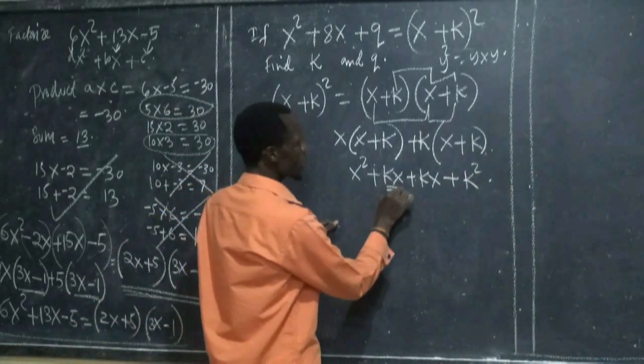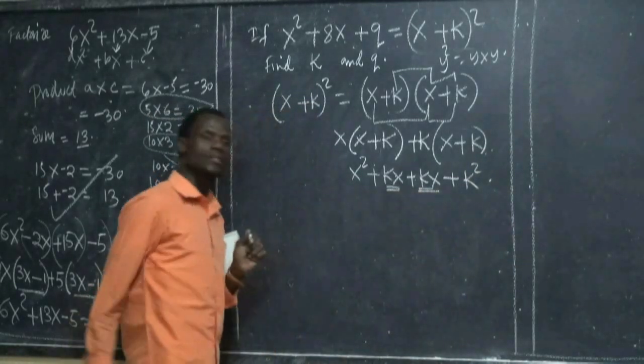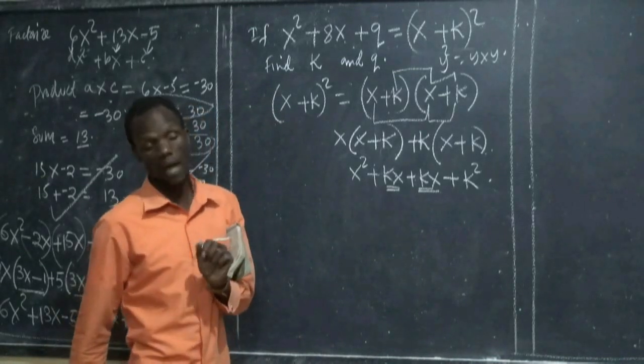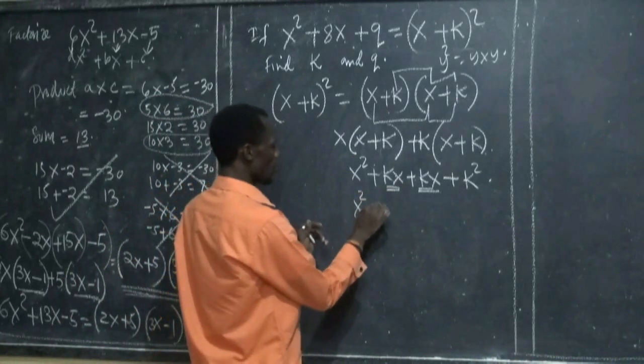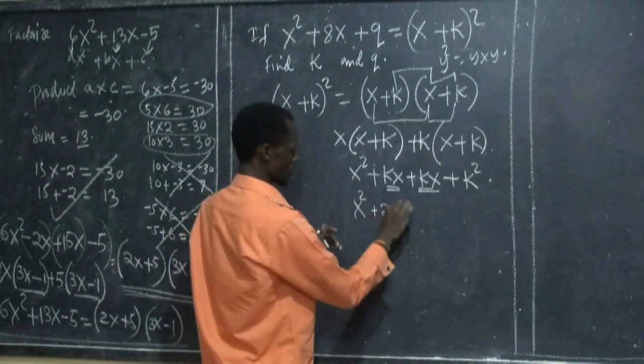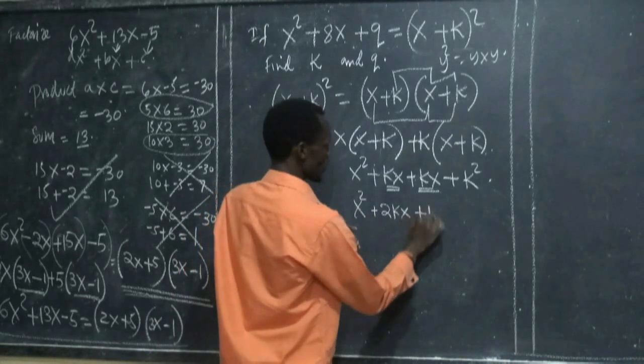This is kx and this is kx. These are called like terms. Now we put them together. Then we find it is x squared plus 2kx, then plus k squared.